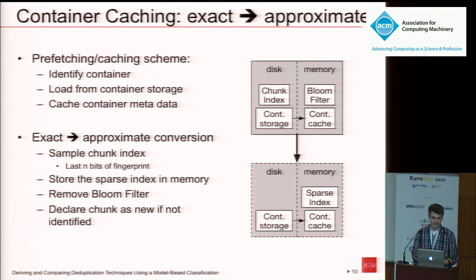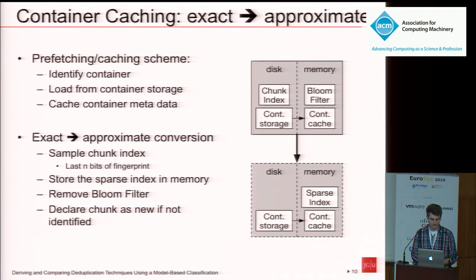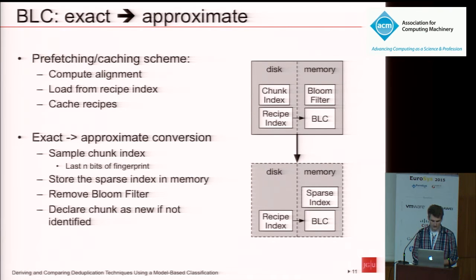For container caching, the prefetching caching scheme identifies containers, loads them from container storage, and caches them with the help of the chunk index entries. To make it an approximate version, you simply sample the chunk index — in the best case, enough that it fits into main memory. For block locality caching, this is exactly the same: sample the chunk index so that it fits into main memory, and then still try to identify chunks based on the fetched recipes.